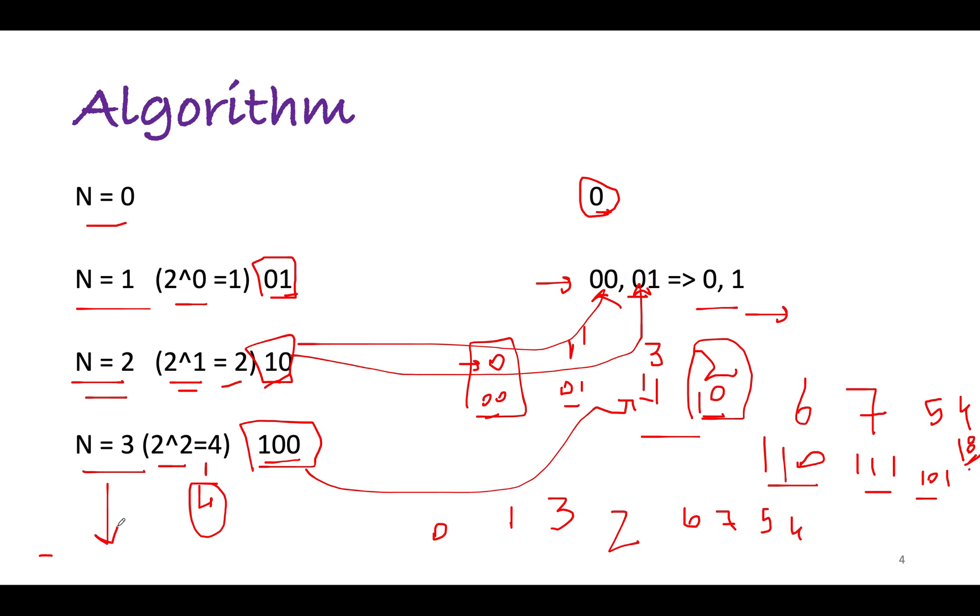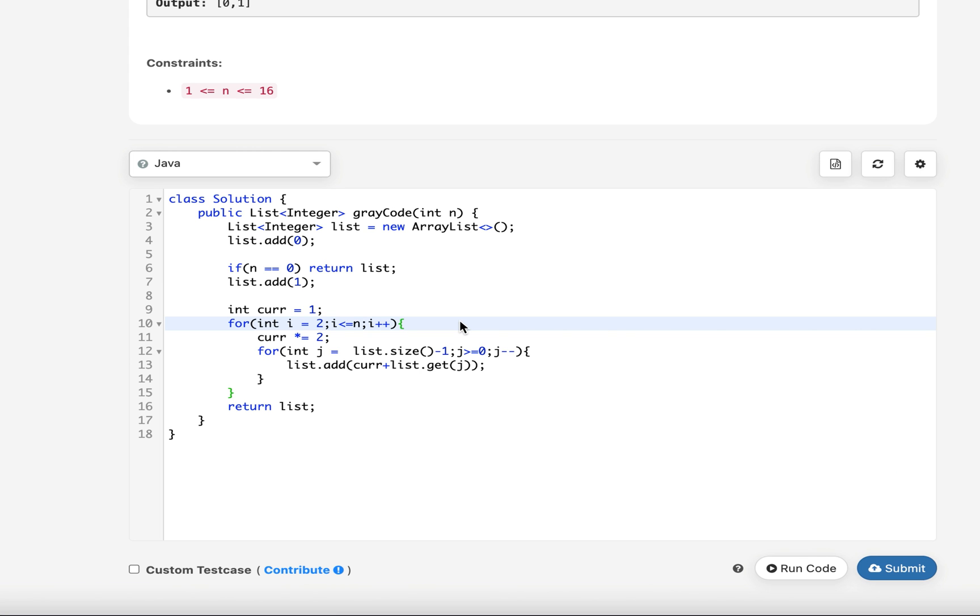So without much ado, let's look at the coding section. Talk less, code more. The logic is pretty straightforward. I have created a list and initialized it to a new ArrayList object and added 0 to it as a default case.